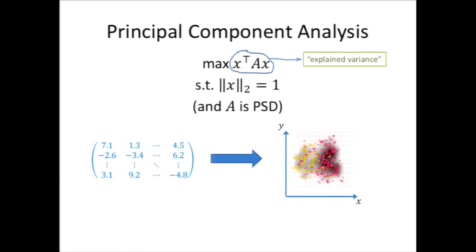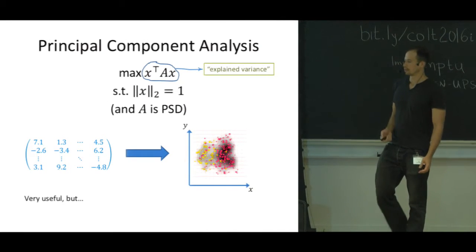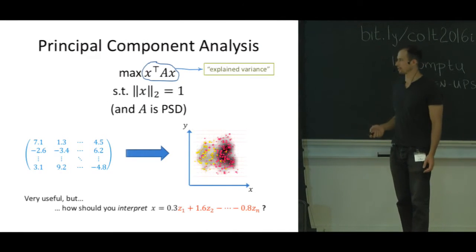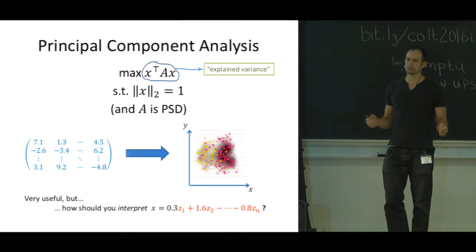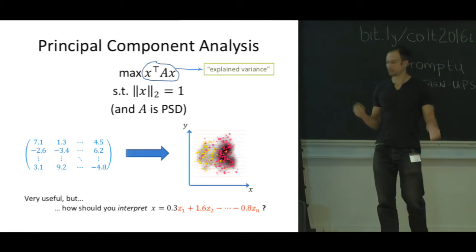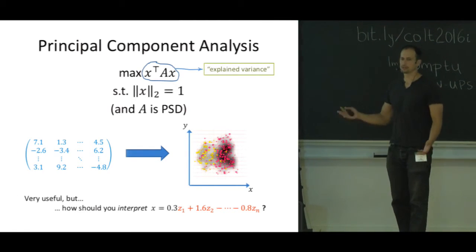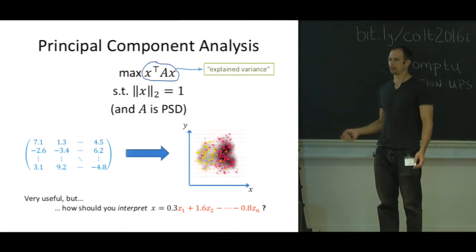It's important to remind you that this quantity we want to maximize, X transpose AX, we call the explained variance. It tells us how much of the matrix is really captured in this two-dimensional picture. But the optimal X that we find is this really long vector: something times Z1 plus something times Z2 minus something times Z3, and it's really hard to convince your favorite biologist this means anything.